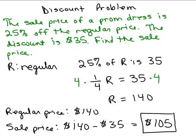And so if you take the regular price, $140, and subtract that $35, you do get the $105. So this seems to make sense. So the regular price of the prom dress is $105.